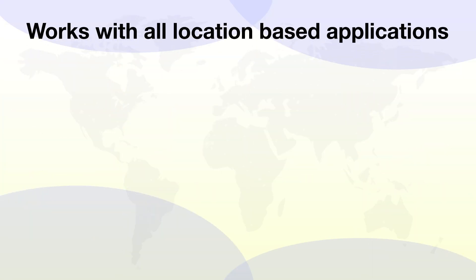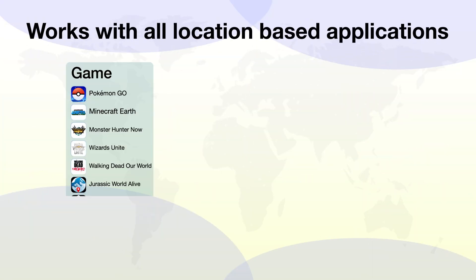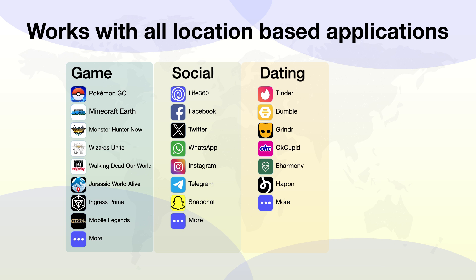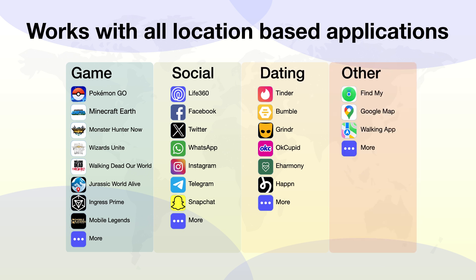ToonsKit Location Changer works with all location-based apps, including game, social, dating, and other types of apps, such as Pokemon Go, WhatsApp, Facebook, and more.